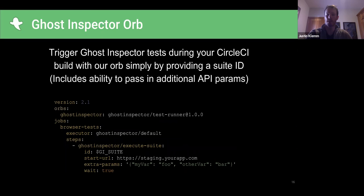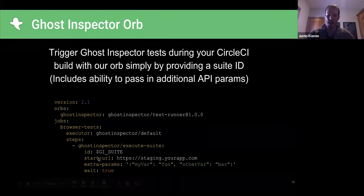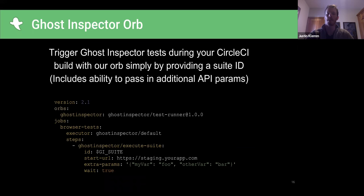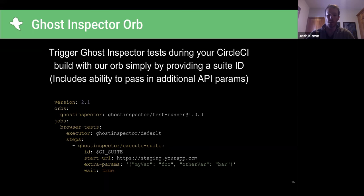Looking at a really simple configuration in our CircleCI config YAML file — we're using our Ghost Inspector orb with the execute-suite option. We're passing it a suite ID to tell it what suite to run and a start URL. The presumption here is that your application is running on a URL like a staging site. You can pass in extra parameters, and when your build process is triggered, these tests will run.